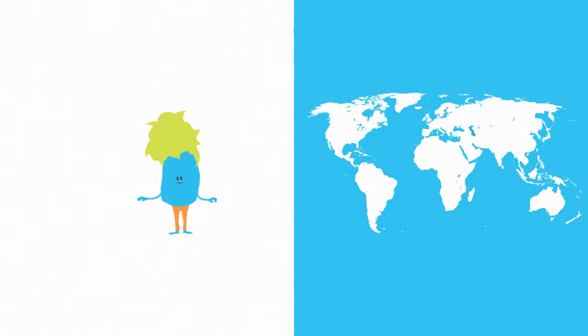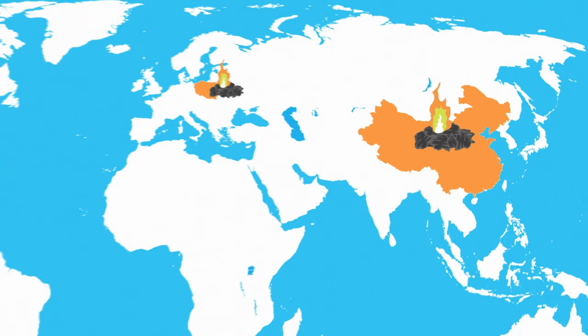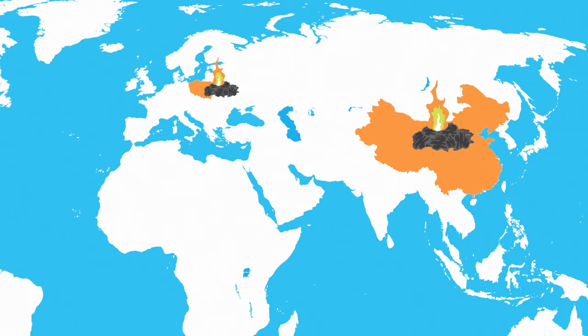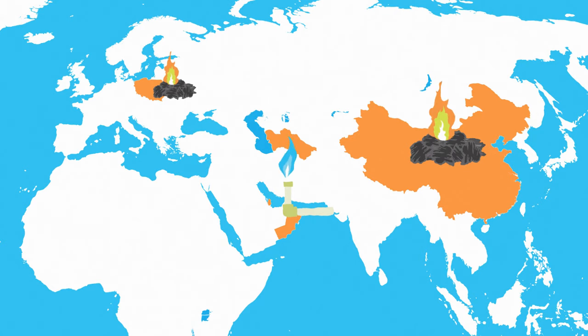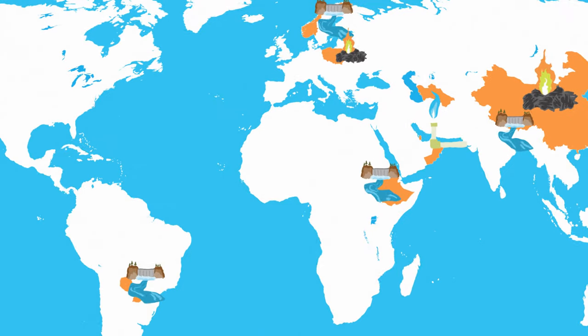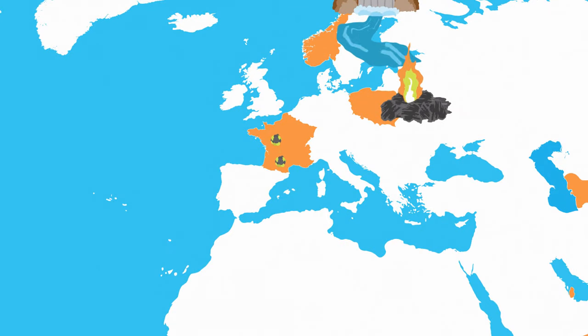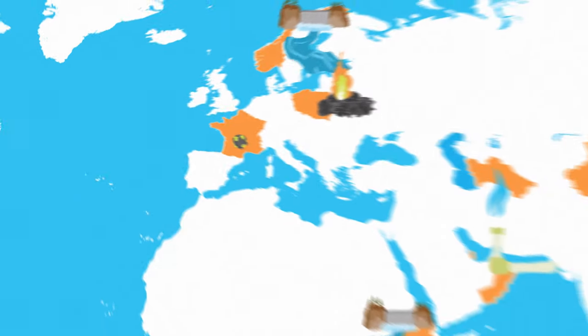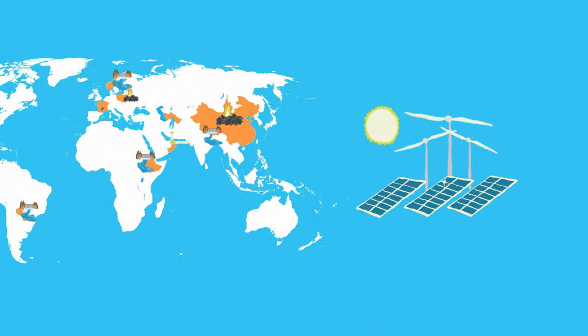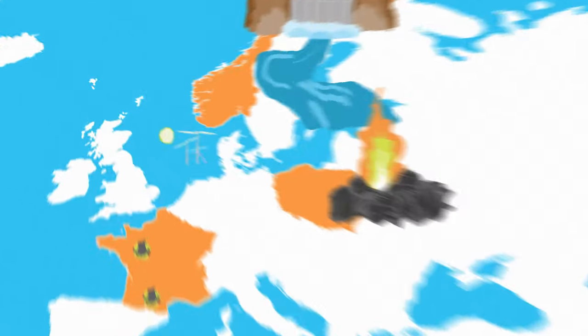Where our electricity comes from depends on where we live. Countries like Poland and China get almost all of their electricity from coal, while others rely more on natural gas. A few countries rely almost entirely on hydroelectric dams, while even fewer get most of their electricity from nuclear fission. No country gets most of their electricity from wind and solar, though Denmark is getting close.